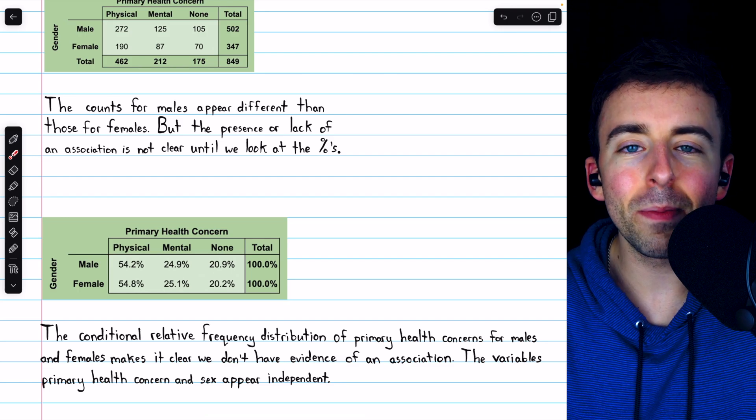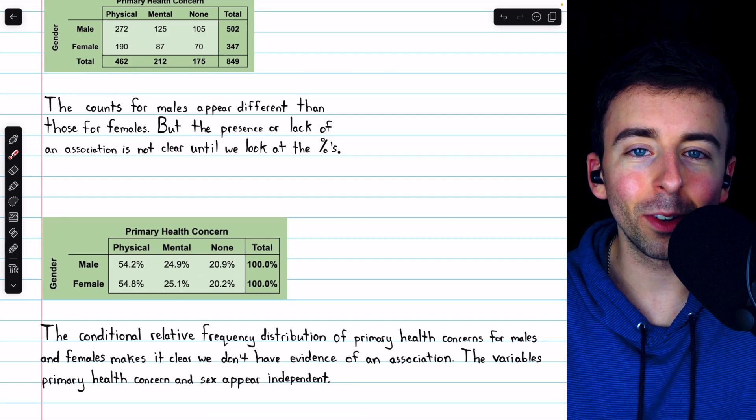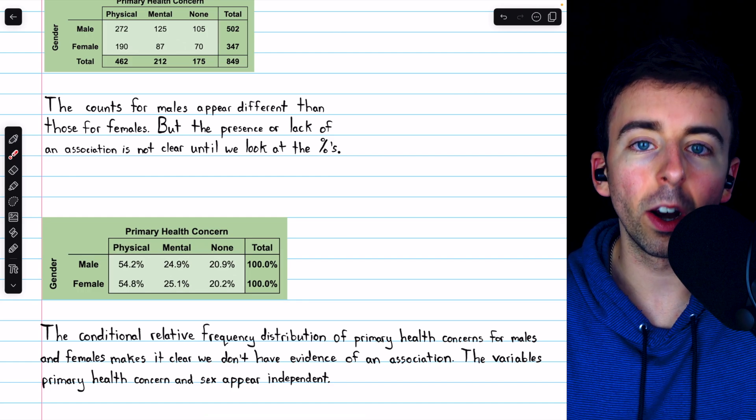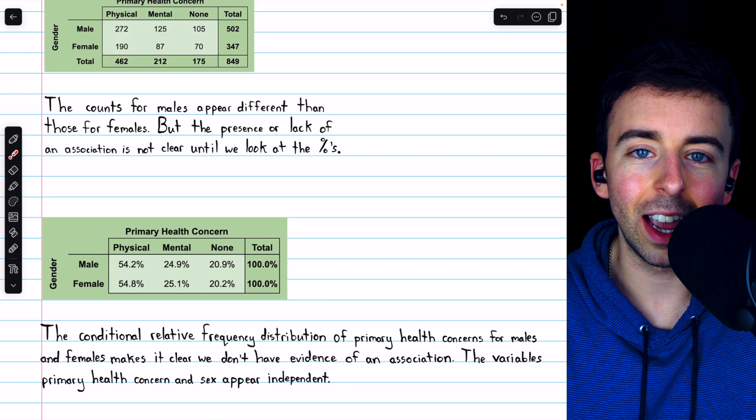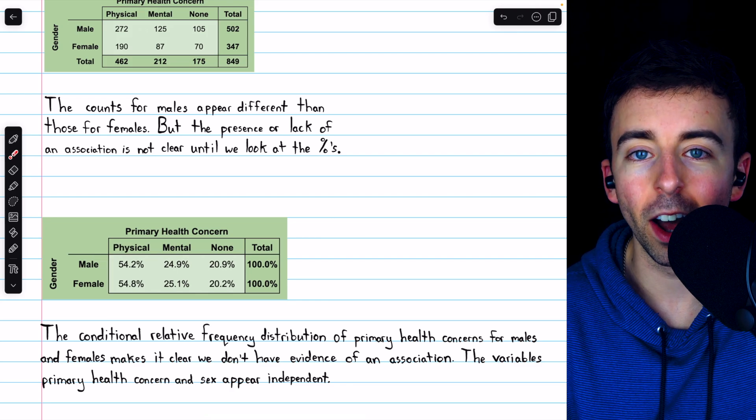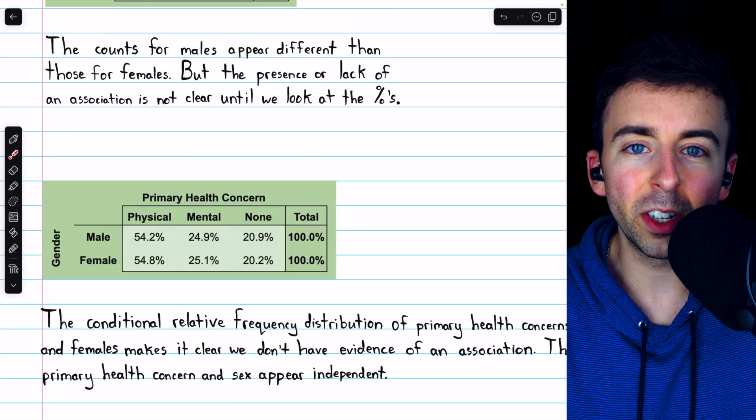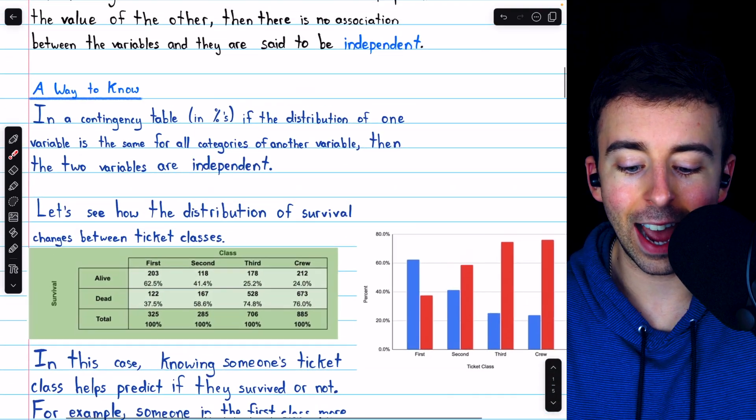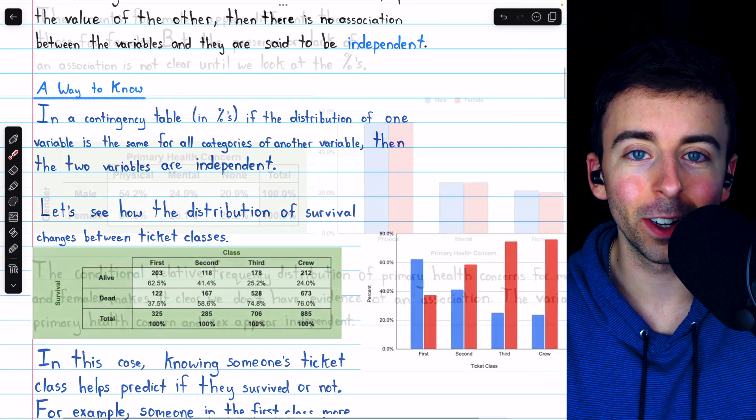For now, I'll say we basically go off vibes. Later in this course, though, we'll go over some more detailed and sophisticated methods for quantifying the association, or how likely it is that the variables are or are not associated. For now, hopefully you're comfortable saying, yeah, these don't look very different, and yeah, these do look very different.